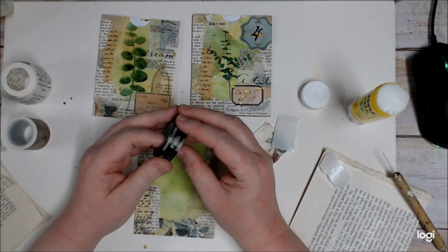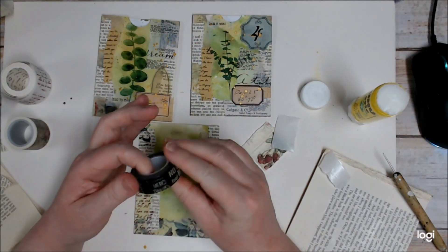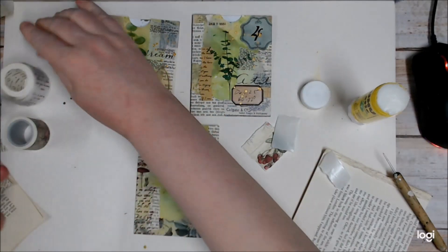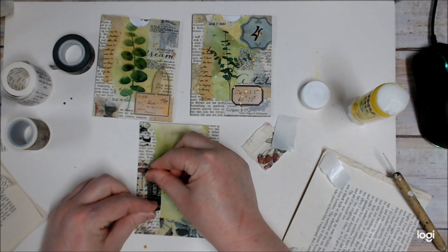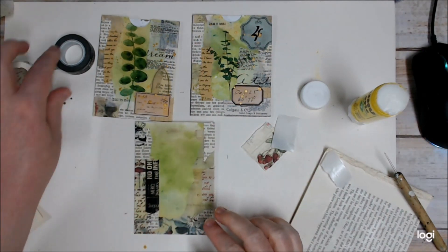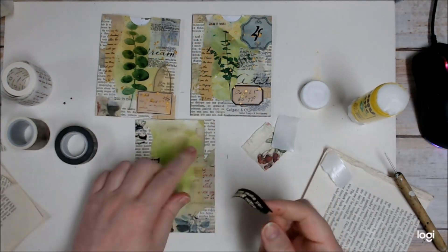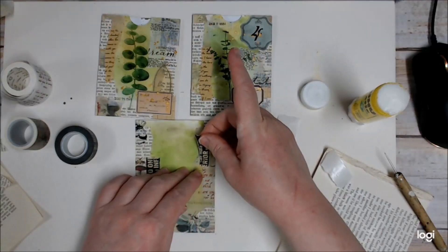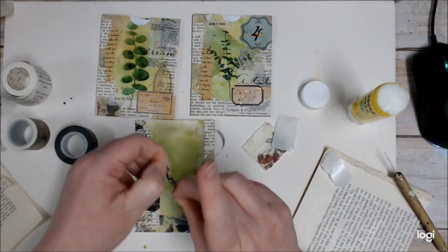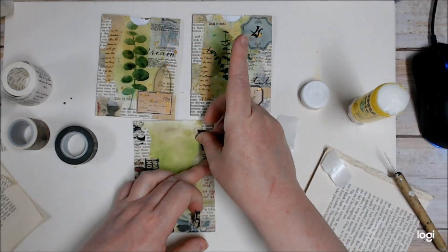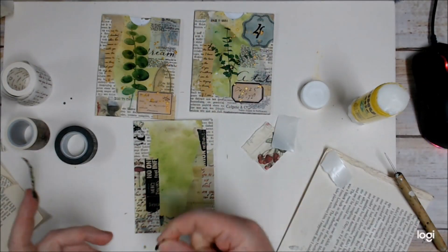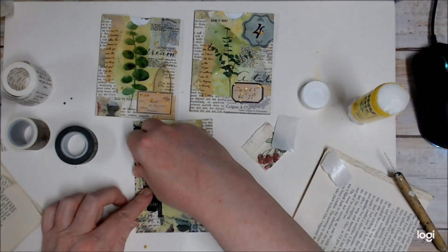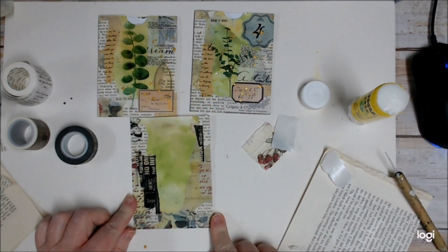And I might just put it like that. And then I want another little small piece just to balance this side. But I'm going to tear it down the middle so I don't have another straight edge. That'll do there.